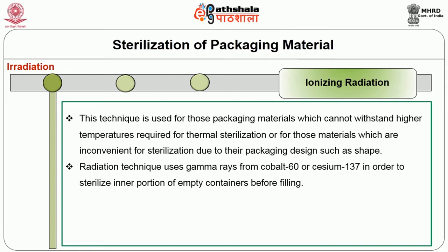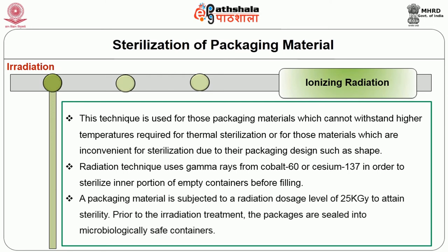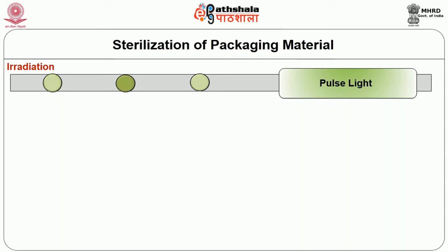Radiation technique uses gamma rays from cobalt-60 or cesium-137 in order to sterilize the inner portion of empty containers before filling. A packaging material is subjected to a radiation dosage level of 25 kilo Gray to attain sterility. Prior to the irradiation treatment, the packages are sealed into microbiologically safe containers.